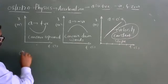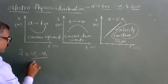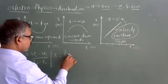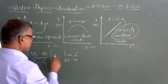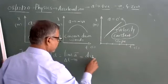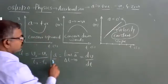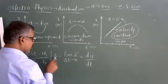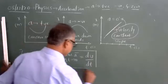Acceleration is defined as average acceleration: it is final velocity minus initial velocity divided by the change in time interval. Or instantaneous acceleration equals the limit of average acceleration as delta-t tends to zero, or acceleration equals the rate of change of velocity. This is the mathematical relation.